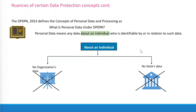GDPR differs here — it does not exclude publicly released data. GDPR says organizations can use data that was released, but must still follow their obligations. Two important points: first, you need to confirm that the data was actually released by the data subject themselves, not just assume it. Second, if you intend to use publicly available information, you must still reach out to the data subject within 30 days or at first communication to inform them you are processing their data.